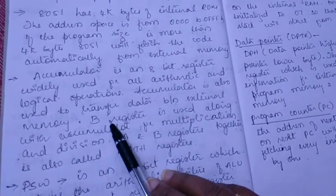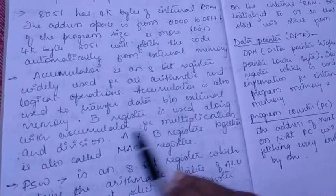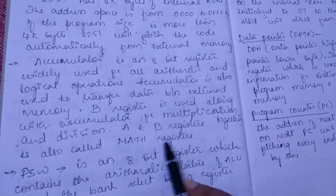We have B register which is used along with accumulator for multiplication and division. A and B registers together is also called math registers.